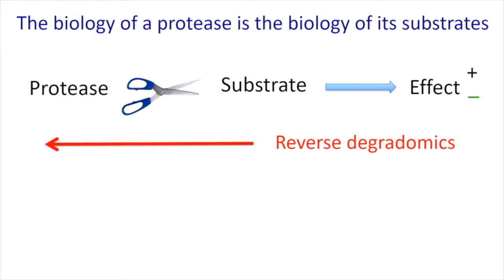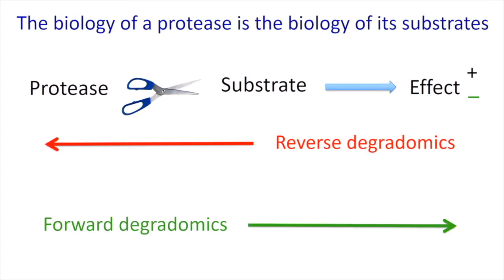We're taking two approaches to understand matrix turnover. One we term reverse degradomics: we take mice with defined genetic mutations and ask which matrix molecules accumulate in the mutant mice, as a way of identifying physiological substrates in developmental phenotypes. The other is forward degradomics, where we either take a library of matrix molecules, add a protease, and determine the sites of cleavage, or we take a human disease state and examine the entire landscape of proteolysis in an unbiased way — providing both mechanisms of disease and potential biomarkers.